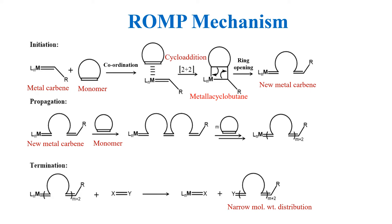In the termination step, an external agent is added to terminate the reaction, or termination may occur by chain transfer to solvent, monomer or polymer. Since there is very little possibility of chain termination, these polymers are living and have a narrow molecular weight distribution — which is very difficult to achieve by standard polymerization methods such as free radical polymerization.